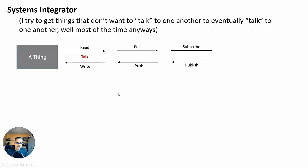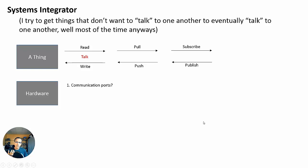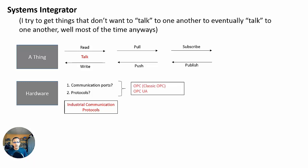This also applies to HighByte Intelligence Hub. When integrating hardware in a plant, I ask two questions: first, what communication ports does it have — RS232, RS485, Ethernet, CANbus? And second, what protocols does it support? I need to know industrial communication protocols, OPC Classic, and OPC UA. You don't abandon this knowledge just by using HighByte Intelligence Hub — you still need these disciplines.